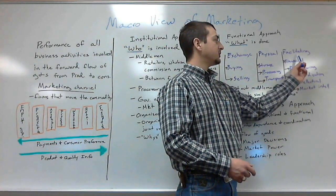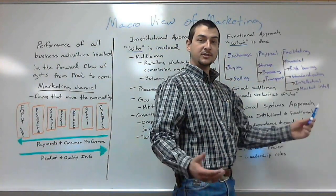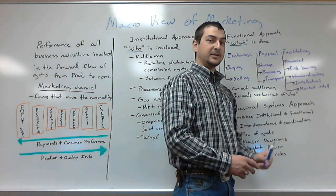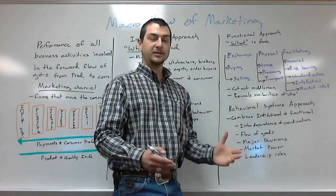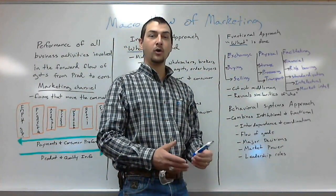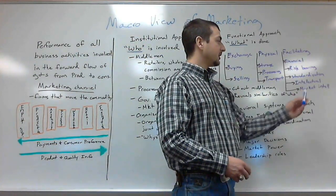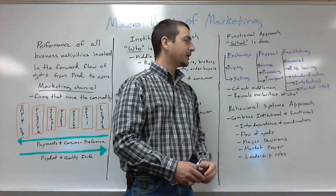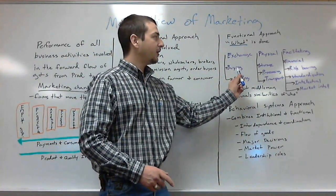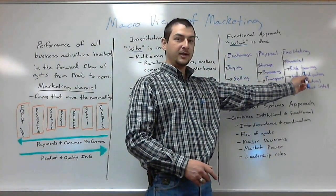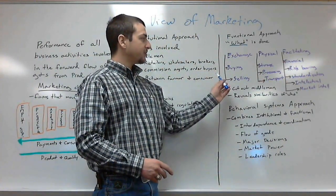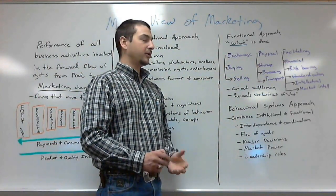Then under the facilitating functions, we have financial functions such as taking a loan from the bank, risk bearing which is your insurance aspect, standardization — making sure that commodities of a certain quality all grade the same way — intellectual property, and market intelligence gathering. Those are all aspects of what is done in the marketing channel.